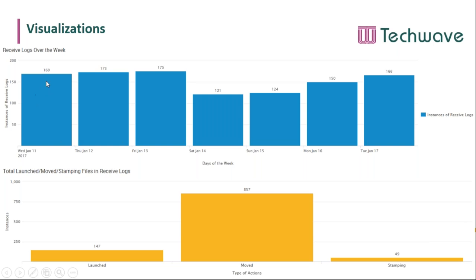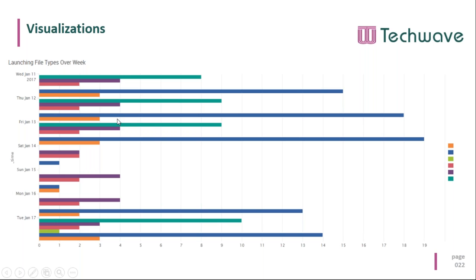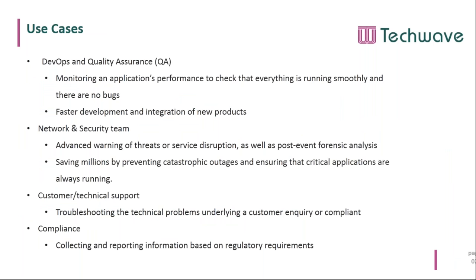Bar graphs can show received logs throughout the week and what type of events are occurring — many files being moved, only a few being launched, others stamping. You can overlay different graphs together to view data differently; a single bright green entry on Tuesday could signal that one file is being transferred that day but not others, prompting deeper analysis. There's a lot of insights you can gain from these visualizations.